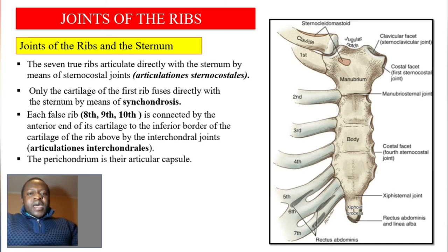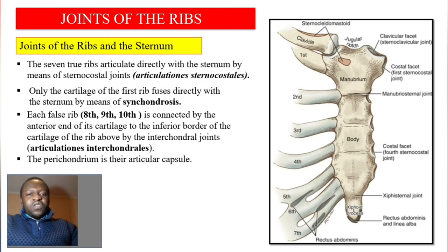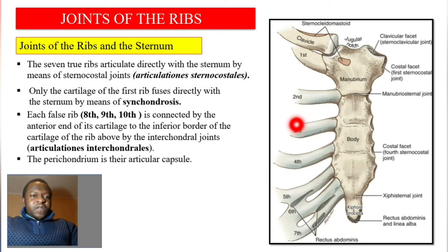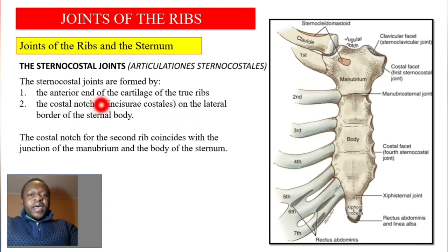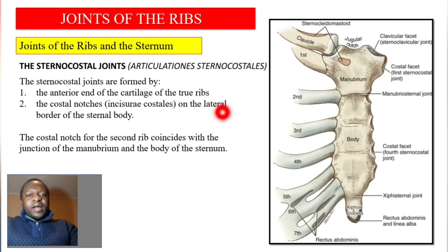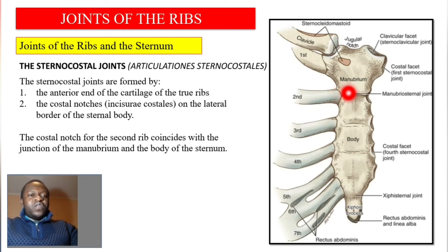The false ribs — ribs 8, 9, and 10 — are connected by the anterior end of their cartilage to the inferior border of the cartilage of the rib above by interchondral joints, articulationes intercondrales, and they have a capsule called the perichondrium. The sternocostal joints are formed by the anterior end of the cartilage of the true ribs and the costal notches, incisura costalis, on the lateral border of the sternal body. The costal notch of the second rib coincides with the junction between the manubrium and the body of the sternum — this junction is called the sternal angle or angle of Louis.